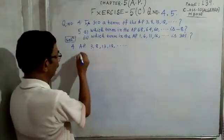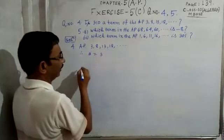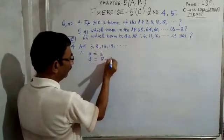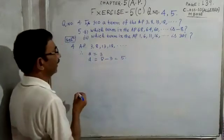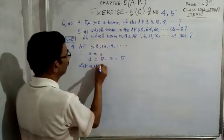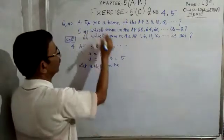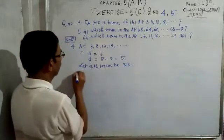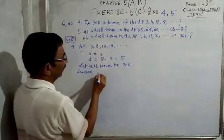For the solution, the first term a is equal to 3. The common difference d equals second term minus first term, which is 5. Let the nth term be 310 — we assume 310 is the nth term and apply the formula.